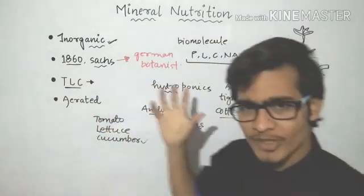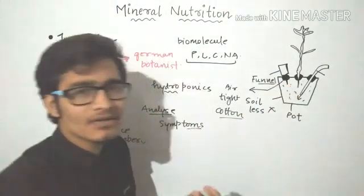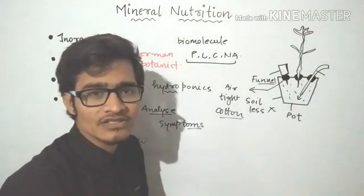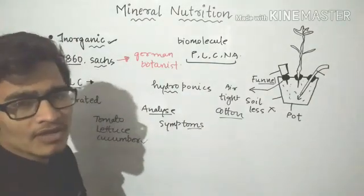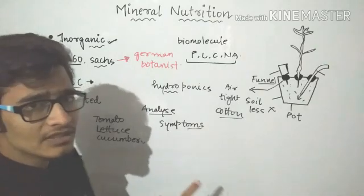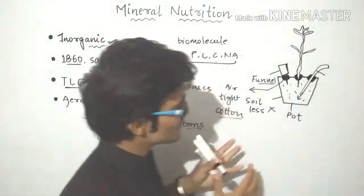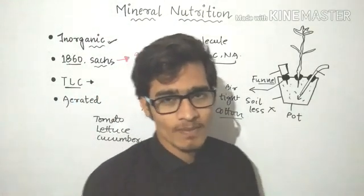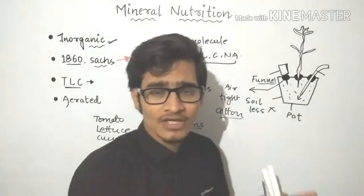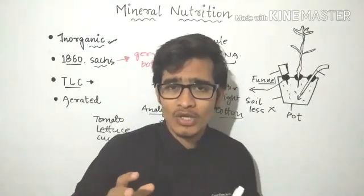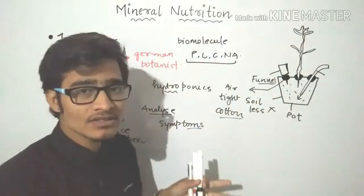This is a general introduction to mineral nutrition — how we can analyze the role of a particular mineral by extracting it from the solution and then analyzing the deficiency symptoms to understand its role in the growth and development of plants. This experiment, known as hydroponics, is quite important from an examination point of view. The definition, examples, and the scientist Julius von Sachs are all frequently asked. This chapter needs careful study because each mineral has slightly different requirements, different deficiency symptoms, and different roles in plants.